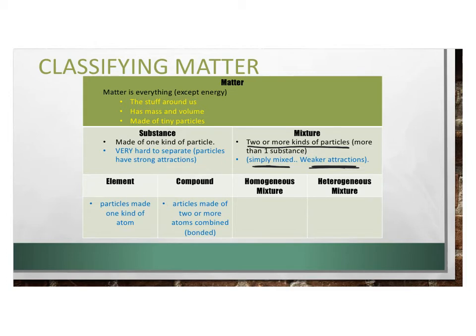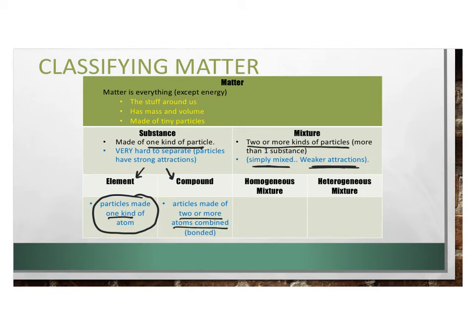Each of these can be broken down into even smaller categories. Substances can be broken down into either elements or compounds. If a substance is an element, those particles are made of only one kind of atom — one kind of particle, one kind of atom. If something is a compound, that one kind of particle is actually made of two or more kinds of atoms stuck together, or as we like to say, bonded.